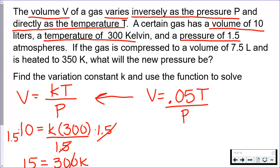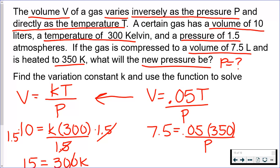So to actually answer the question, it says, if the gas is compressed to a volume of 7.5 and is heated to a temperature of 350, what will be the new pressure? So that means we're trying to figure out P. So plug in everything. I've got 7.5 for V, temperature is 350. We don't know P.